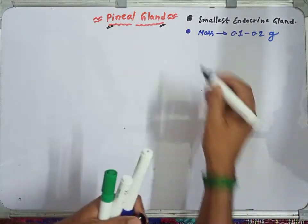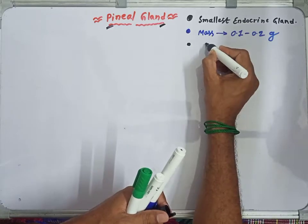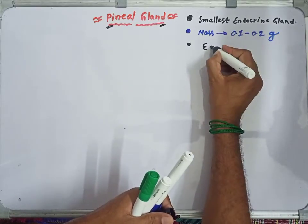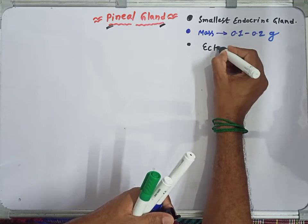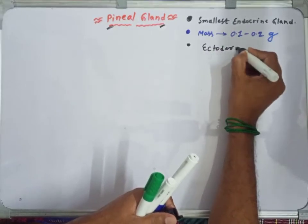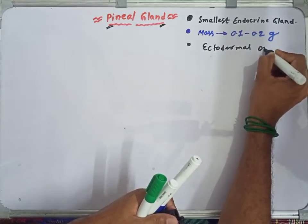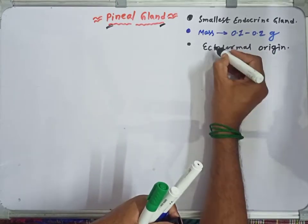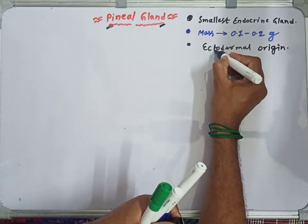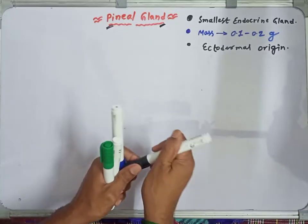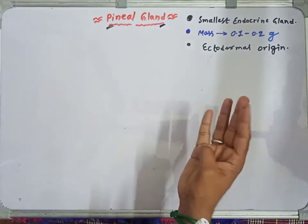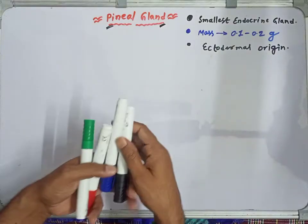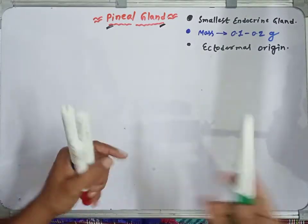The pineal gland has ectodermal origin. Our body has three germ layers: ectoderm (outer), mesoderm (middle), and endoderm. So the pineal gland originates from ectodermal tissue.